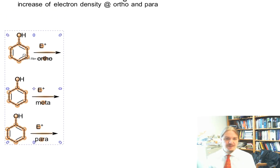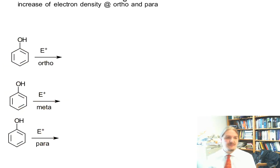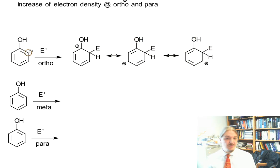positions, by attack at each of the three possible positions. I'm going to need to drag this down a little bit because I know what I'm going to try to do. We're going to start with ortho. If we get electrophilic attack at ortho, we generate this carbocation intermediate